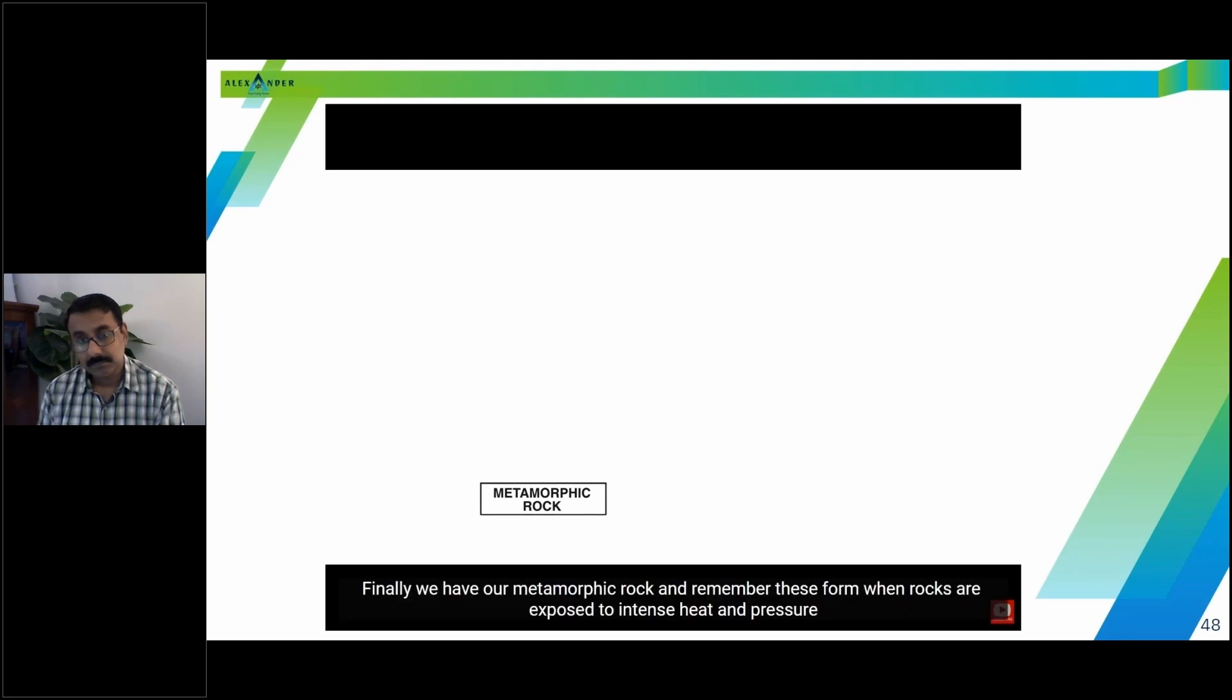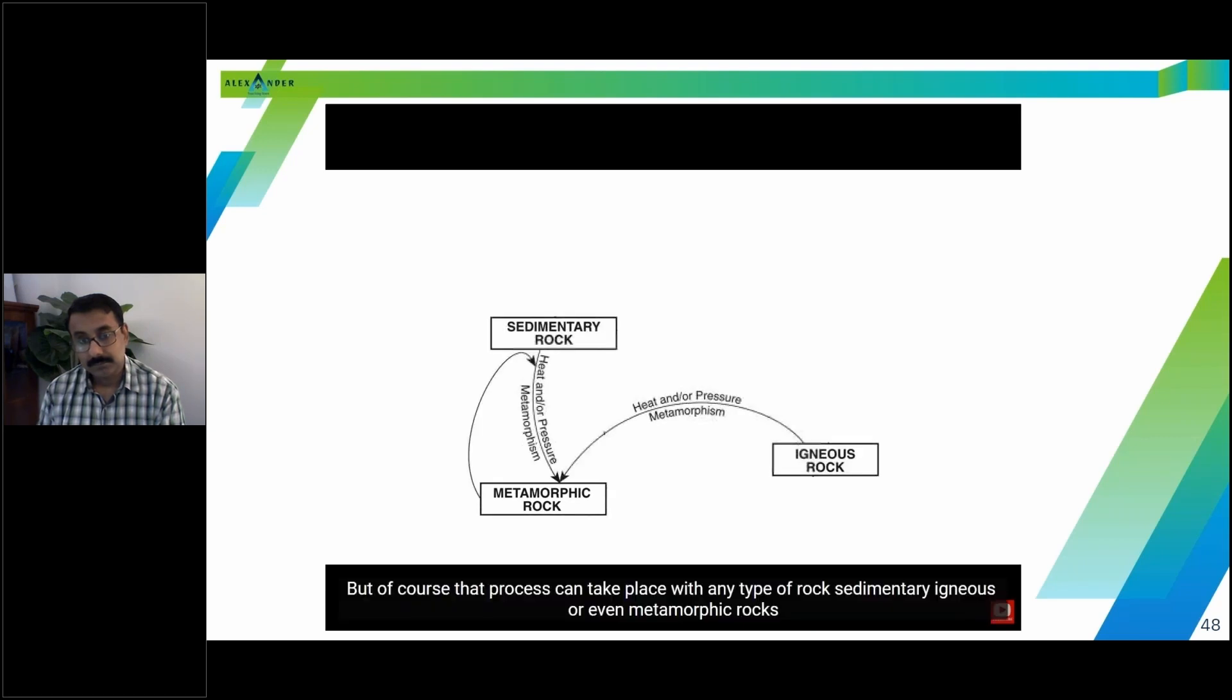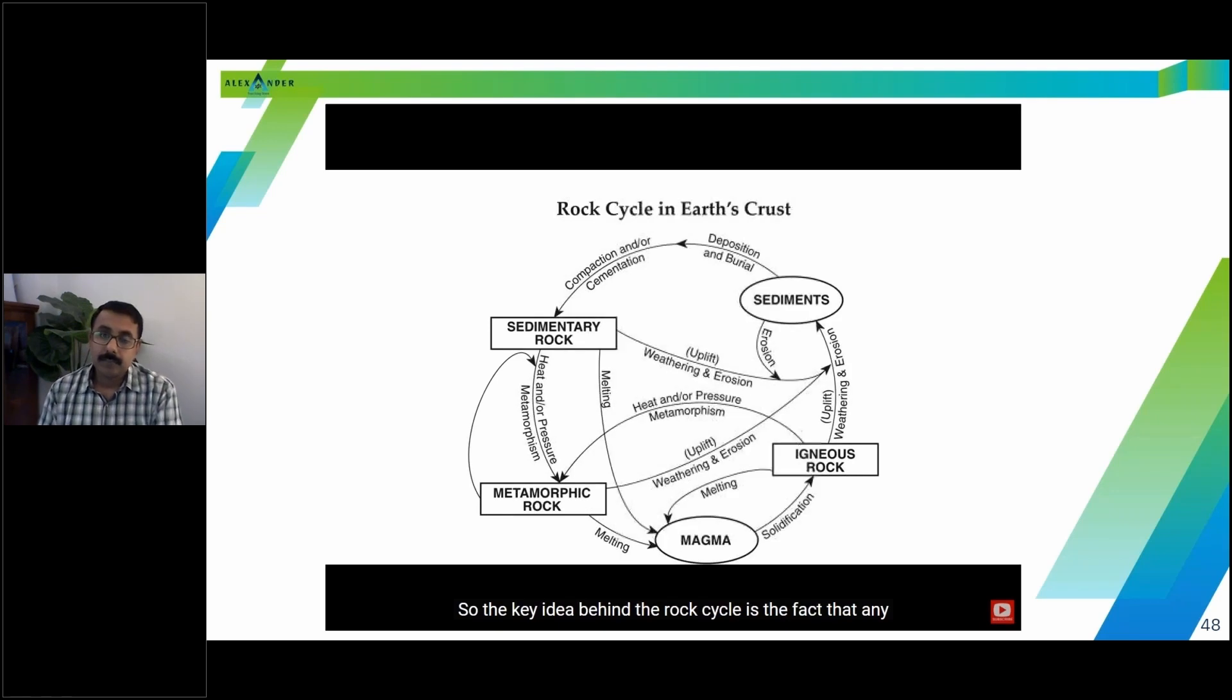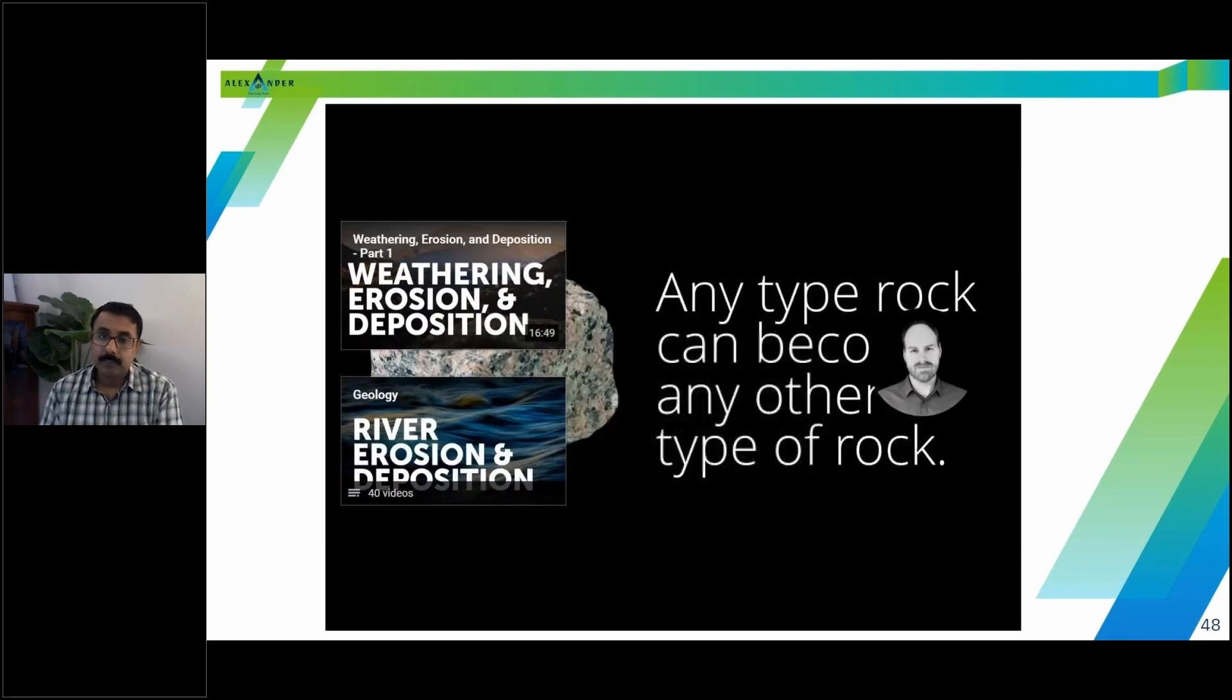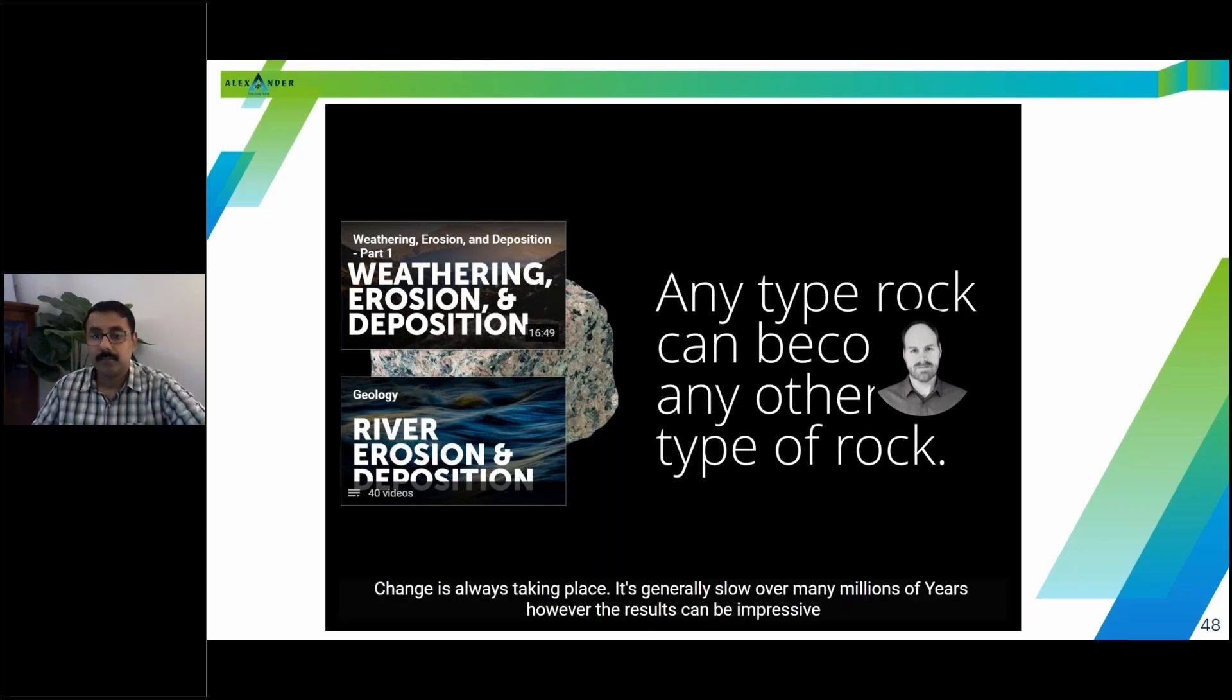Finally, we have our metamorphic rock. And remember, these form when rocks are exposed to intense heat and pressure. But of course, that process can take place with any type of rock, sedimentary, igneous, or even metamorphic rocks. So the key idea behind the rock cycle is the fact that any rock can become any other kind of rock. It can even become itself. Change is always taking place. It's generally slow over many millions of years. However, the results can be impressive.